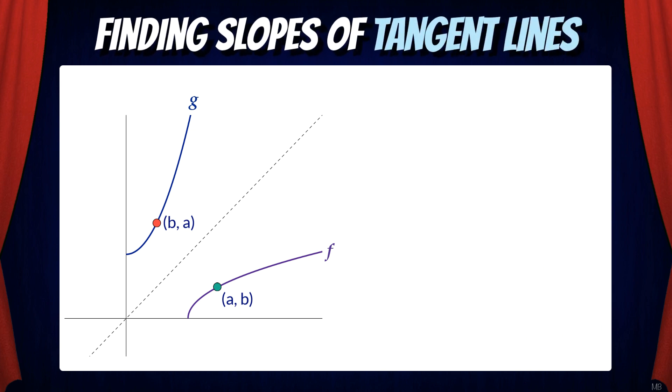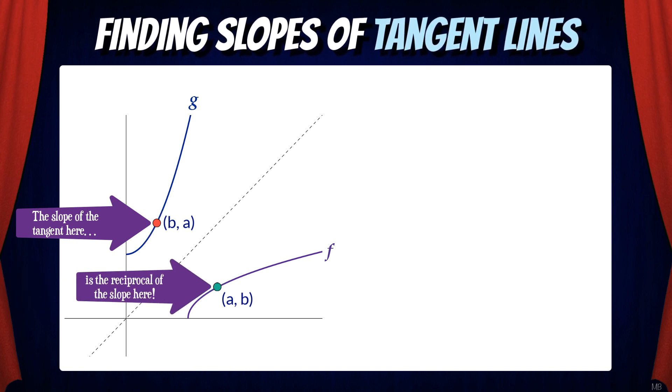We can apply this same logic when finding slopes of tangent lines. If I want the slope of the tangent at the point b on the g graph, then that would be the reciprocal of the slope at the point a on the f graph.